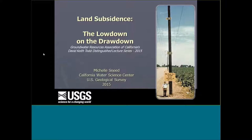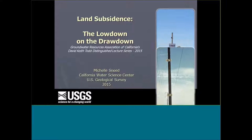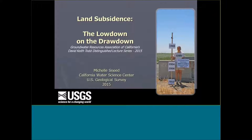If you've ever seen anything about land subsidence, no doubt you've seen this picture of Joe Colin using a telephone pole in the San Joaquin Valley to illustrate the amount of subsidence — about 30 feet between 1925, where the sign is up at the top, and 1977 where he's standing. That's about 30 feet in 50 years. People have been asking me for a couple of years how to redo this, and so I have, and this is what the new picture looks like.